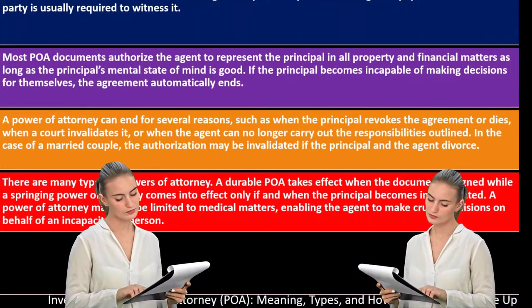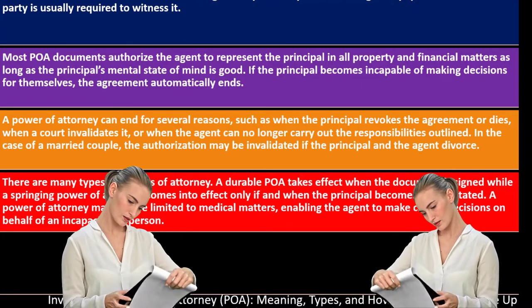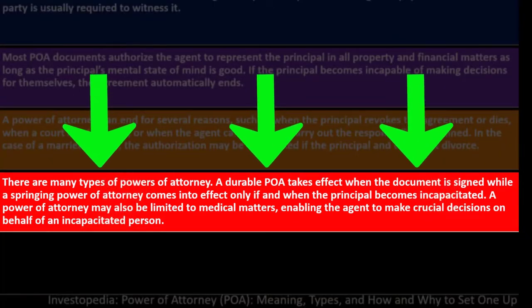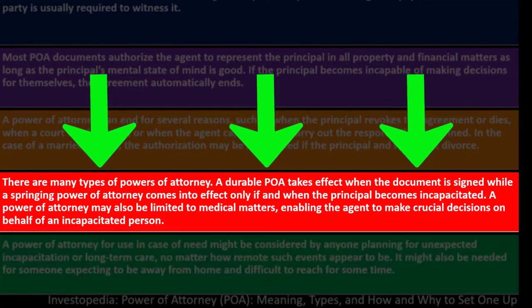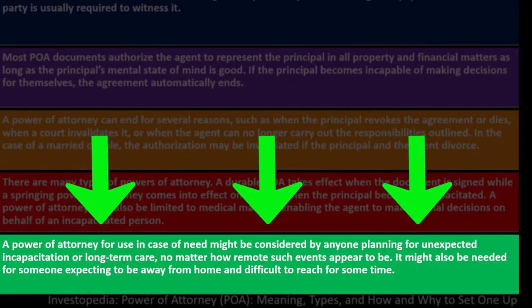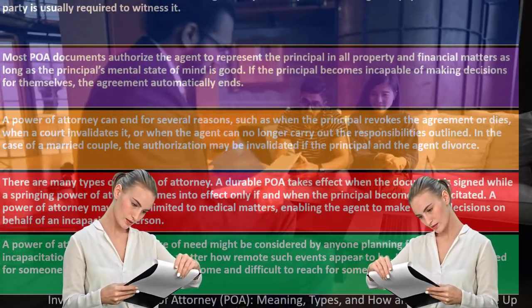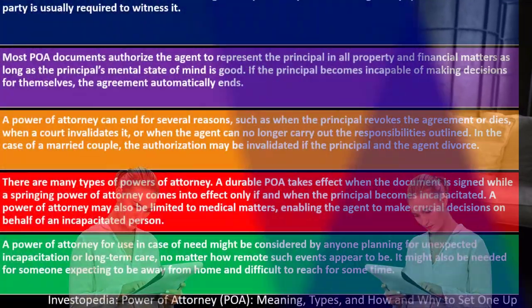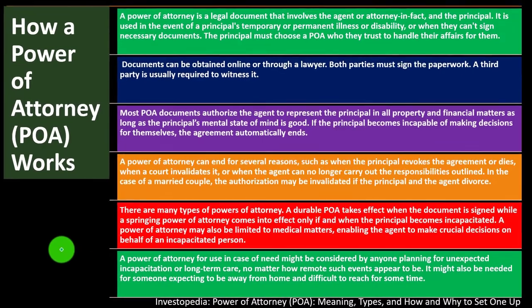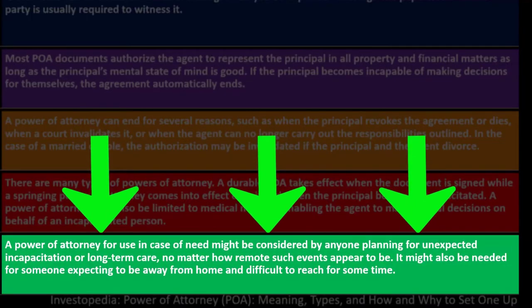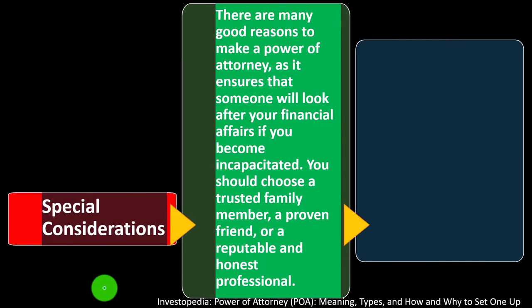There are many types of power of attorney. A durable POA takes effect when the document is signed, while a springing power of attorney comes into effect only if and when the principal becomes incapacitated. A POA may also be limited to medical matters, enabling the agent to make crucial decisions on behalf of an incapacitated person. A POA for use in case of need might be considered by anyone planning for unexpected incapacitation or long-term care, no matter how remote such events appear.